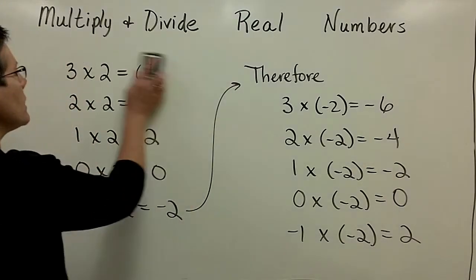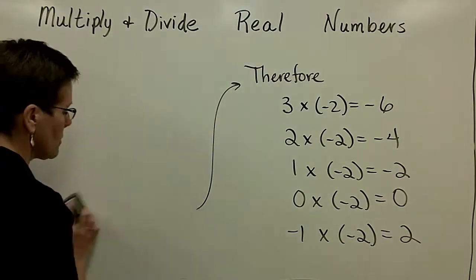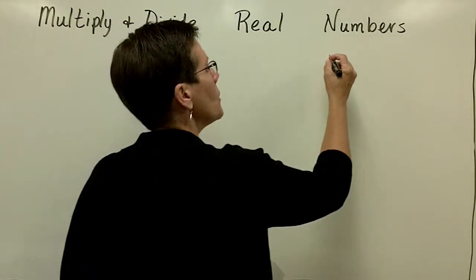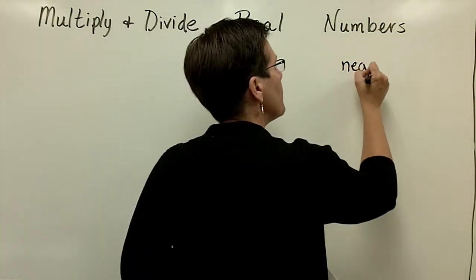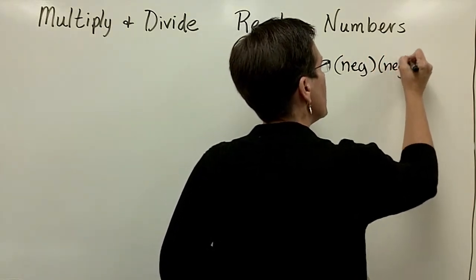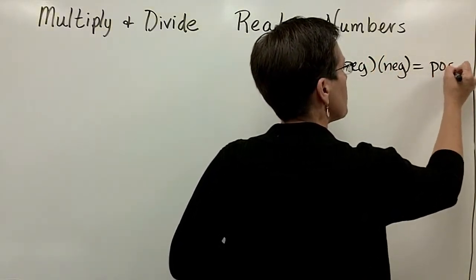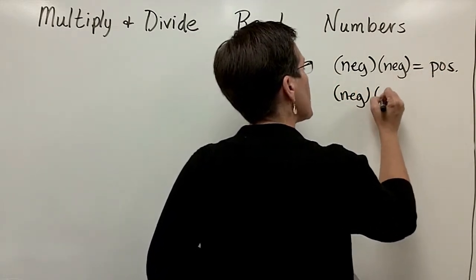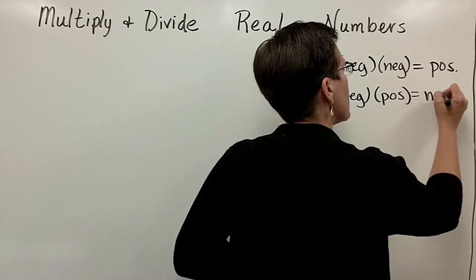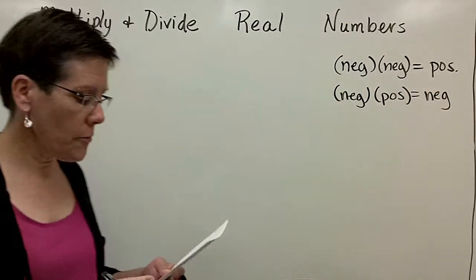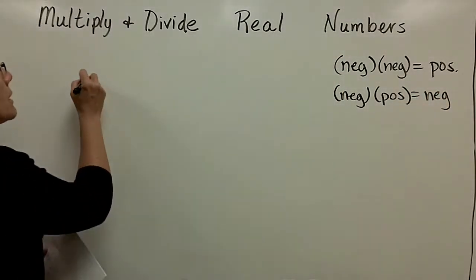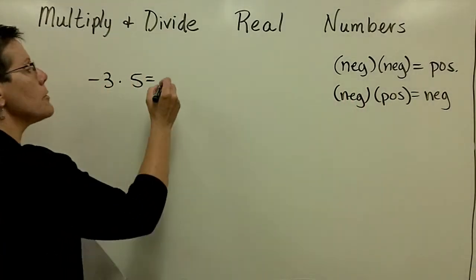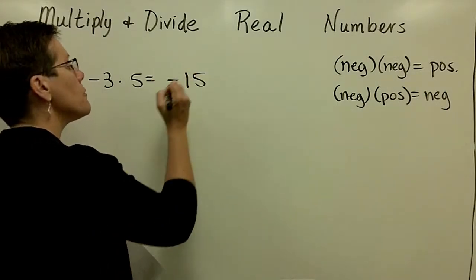So let's write in summary and practice a few problems, including a fraction or two. We now know that a negative number times a negative number gives us a positive result, and a negative number times a positive number gives us a negative result. For example, a negative 3 times a positive 5 — a negative times a positive — gives me negative 15.